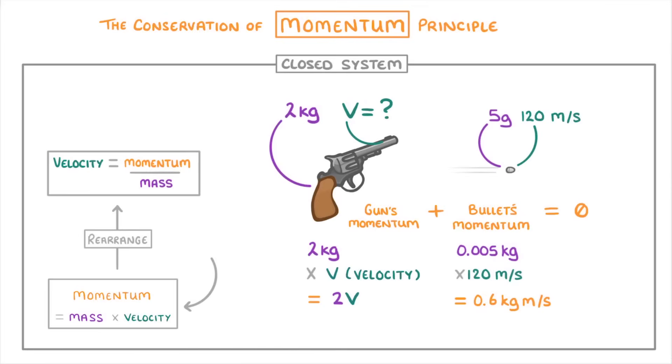Finally, we can use these momentum values for the gun and the bullet to rewrite our equation, as 2V plus 0.6 equals zero. And then we can just rearrange this equation to find out the missing value of V. So first, we subtract 0.6 from both sides, giving us 2V equals negative 0.6. And then we divide both sides by 2, leaving us with V equals negative 0.3 meters per second, which is the gun's recoil velocity.